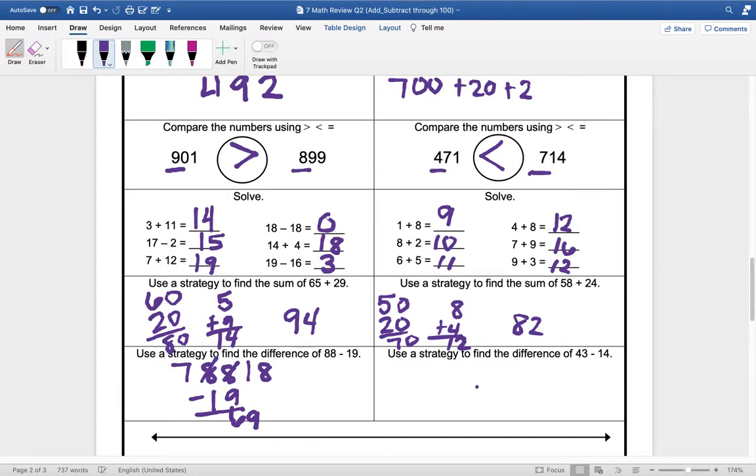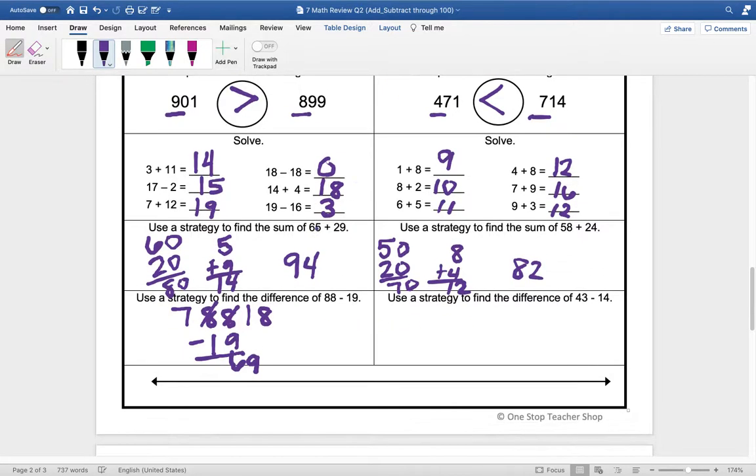Using a strategy to find the difference of 43 minus 14. All right, let's use our number line for this one. So we're going to start at 43 and we're going to go backwards because we're subtracting 14. Let's go backwards 10, so this would be minus 10, and that would be 33. And then we're going to go backwards 4, so minus 1, 2, 3, 4. So 33, 32, 31, 30, and then 30 minus 1 is 29. So our answer is 29.